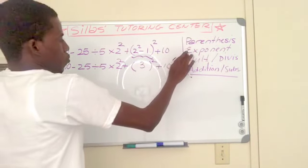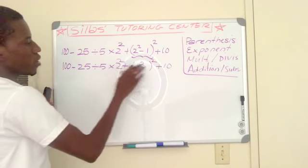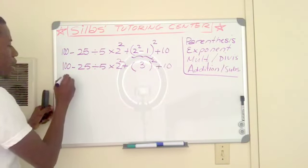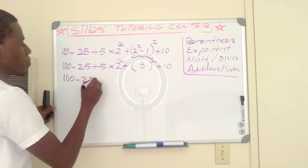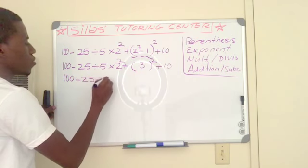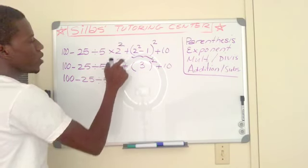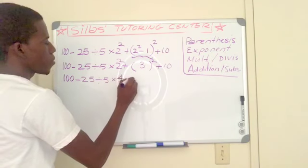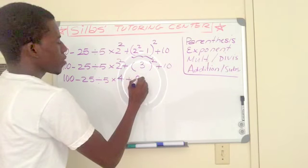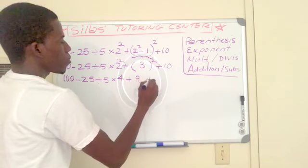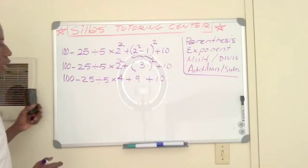We already did the parenthesis, now we have to do the exponent. I have exponents here and there, so I keep everything the same and just do the exponents: two squared is four, plus three squared is nine, plus ten.